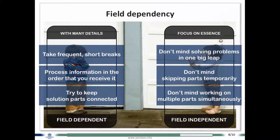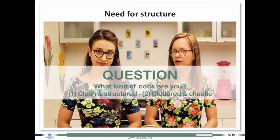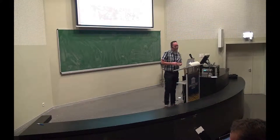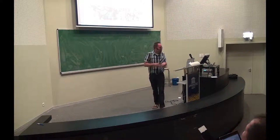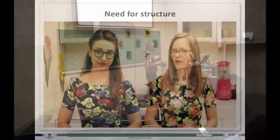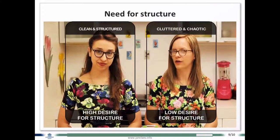And then lastly, there's also the need for structure. So the third question: when you have to cook something in your kitchen, who is chaotic? The whole kitchen is a mess. And the second type is who is well-organized, very structured. Well, the first type here, they have a low desire for structure, while the second type has a high desire for structure. If you're very structured, it's because you desire structure.